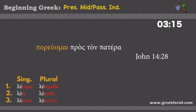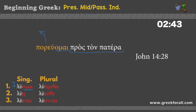'Poreuomai pros ton patera.' In this example we have a verb and a prepositional phrase. 'Pros ton patera' means 'to the father.' We don't have any subject written, so whenever we see a situation like that we draw the subject out of the verb. We look at the ending and see '-omai,' which gives us first person singular: 'I.' So we translate the whole thing as: 'I am coming' or 'I am going to the father.'